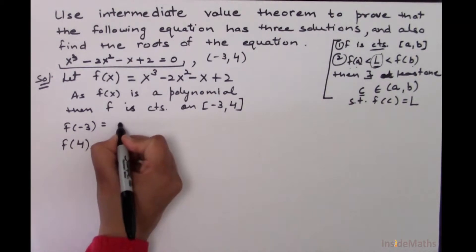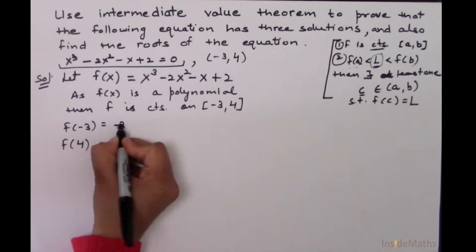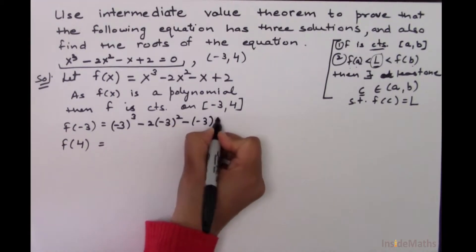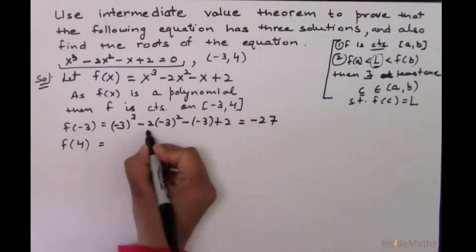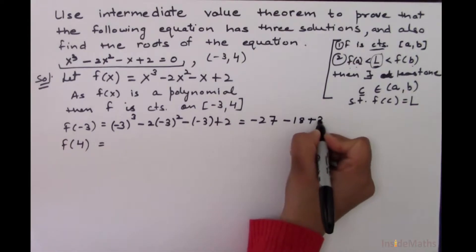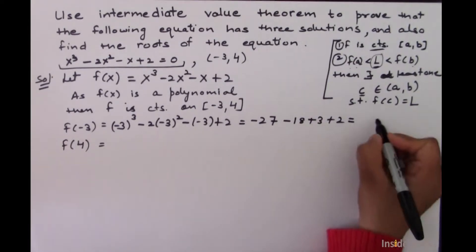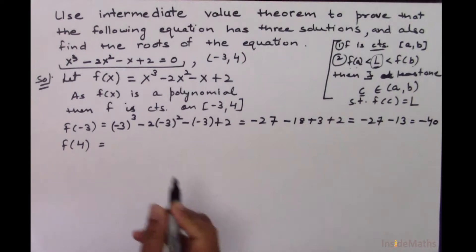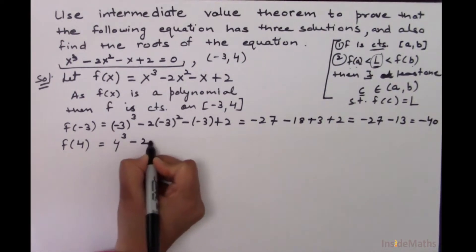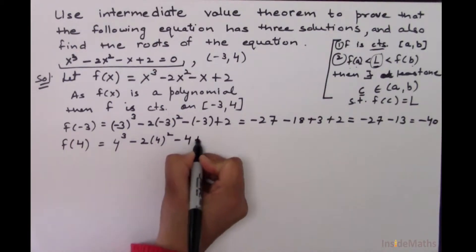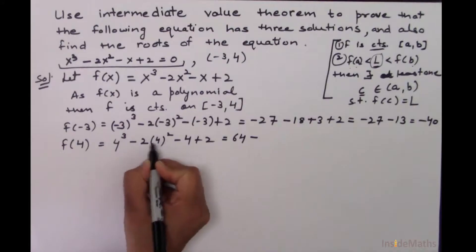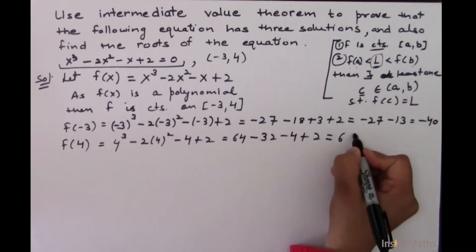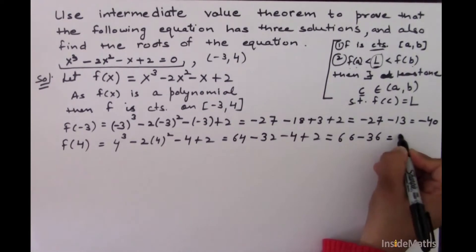So f of minus 3 equals minus 3 cubed minus 2 times minus 3 squared minus minus 3 plus 2, which equals minus 27 minus 18 plus 3 plus 2, giving f of minus 3 equal to minus 40. And f of 4 equals 4 cubed minus 2 times 4 squared minus 4 plus 2, which equals 64 minus 32 minus 4 plus 2, giving f of 4 equal to 30.